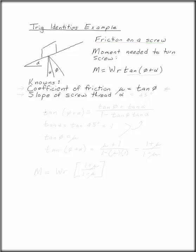One example of where you might use trig identities in statics class is for friction on a screw. The moment needed to turn a screw is given by M equals WR tan of phi plus alpha.